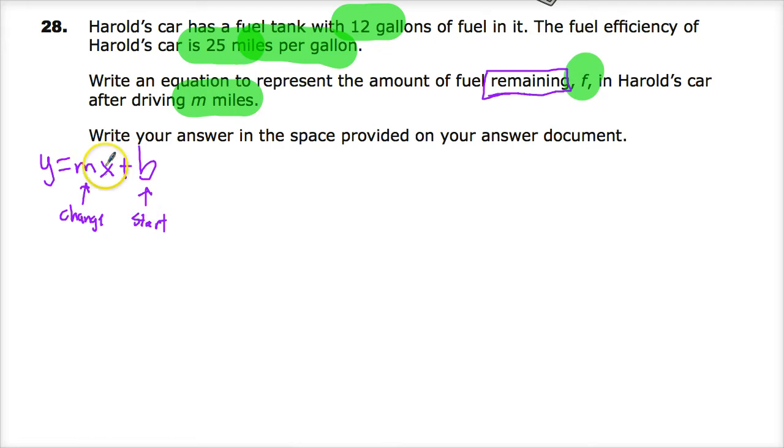Now my starting point is how much gas I have in the tank when it's full - 12 gallons. Instead of a plus, this Y equals MX plus B is going to get flipped around a little bit. Instead of adding, I'm going to subtract every time I drive. I want to know about fuel.